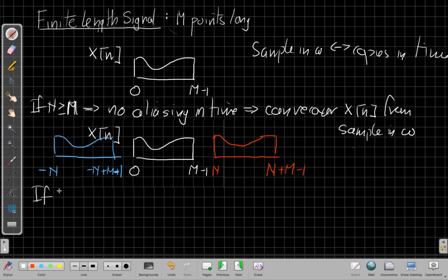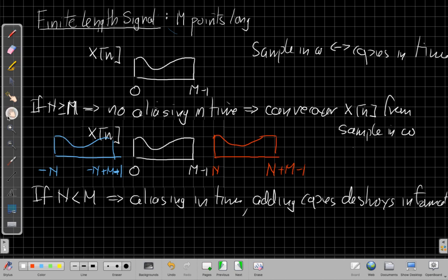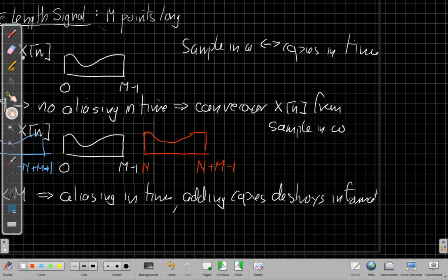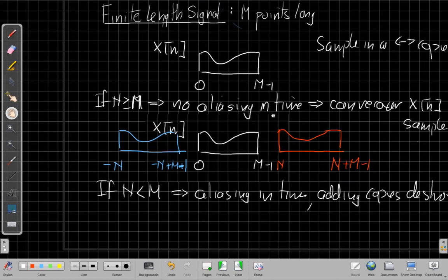But if the number of frequency samples is less than the length of the signal, then we will get aliasing in time. And those copies will overlap and add. We add them up when they overlap, and then adding the copies destroys information.